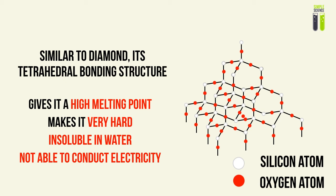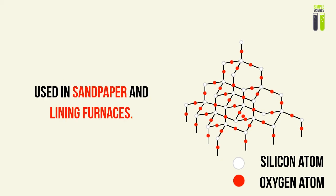Silicon dioxide is insoluble in water and has no free valence electrons, so it cannot conduct electricity. As a result, it can be used in sandpaper and to line surfaces. It is used to line surfaces because it is cheap — it exists naturally as sand — and because its very strong covalent bonds give it a high melting point, so at high temperatures such as in a furnace it will not break down.